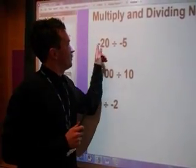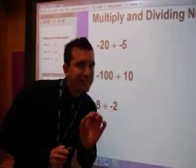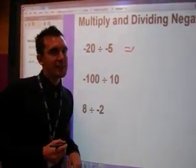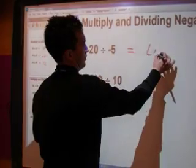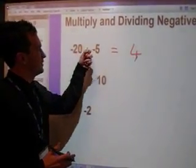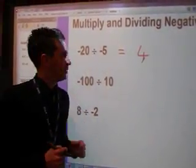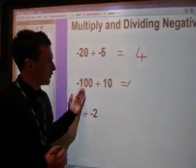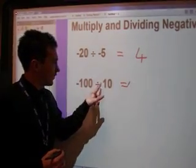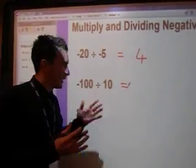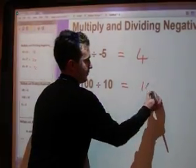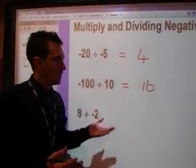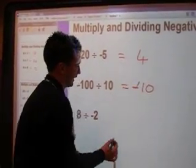We've got division. Twenty divided by five. Deal with the numbers first. How many fives go into twenty? Four. Now look at the signs. The signs are both negative. They're the same. So the answer stays positive. The next one. Deal with the numbers. A hundred divided by ten. How many tens go into a hundred? Ten. The signs. Negative. Positive. Different signs. So my answer is negative.